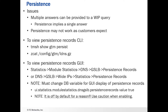There are some issues that can happen with persistence that need to be considered. First of all, multiple answers can be provided to a WIP query, meaning that the number of items returned in the answer and the additional information is greater than one. Persistence implies a single answer, because we're going to try to respond to a particular LDNS with the same answer every time. So persistence may not work as customers expect if they have their BIG-IPs, GTMs, configured to return more than one answer — we're going to see that in some examples later.